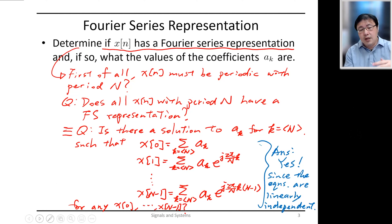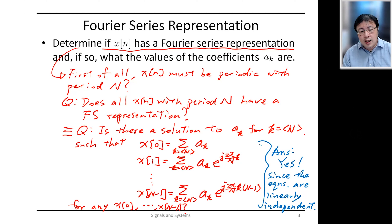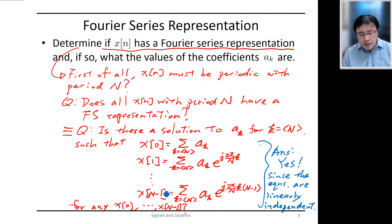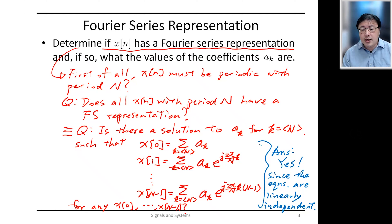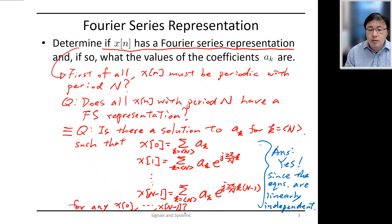Because of this finite summation, the existence of the Fourier series representation is much easier to show. As long as you are able to find the coefficients for any set of N consecutive values of x, you can say that the Fourier series representation exists — and in fact this solution must always exist because these linear equations are linearly independent.